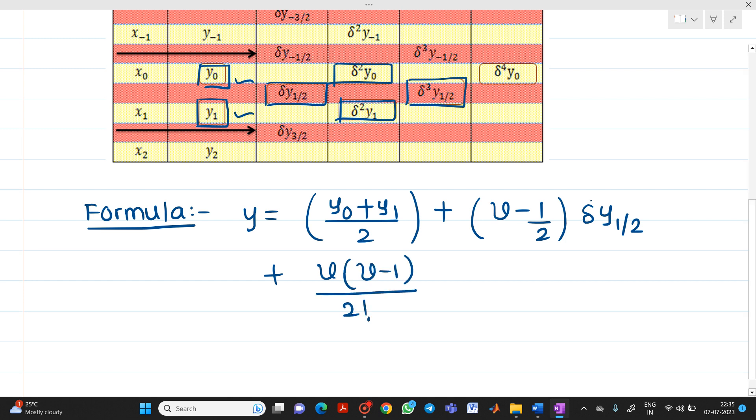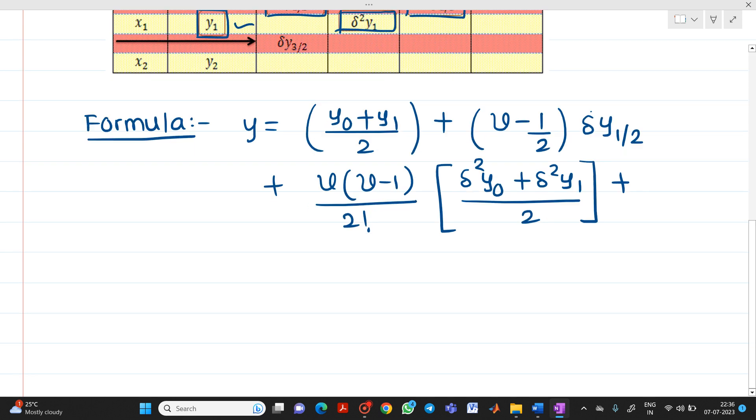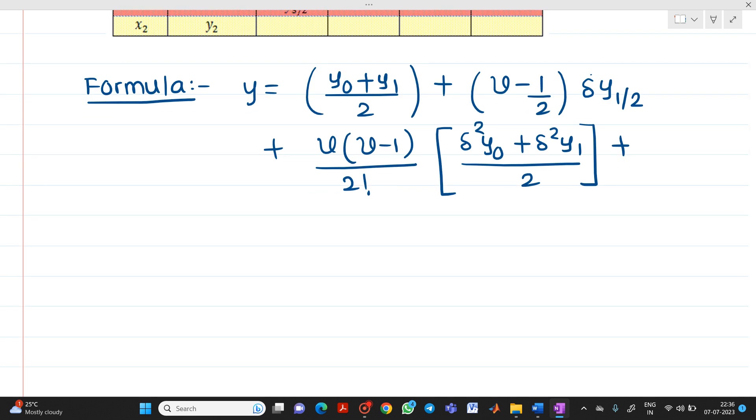plus v into v minus 1 upon 2 factorial. Again, if you see here you have two values. So, let me take here average, del square y0 plus del square y1 divided by 2 plus this will be del cube of y1 by 2.